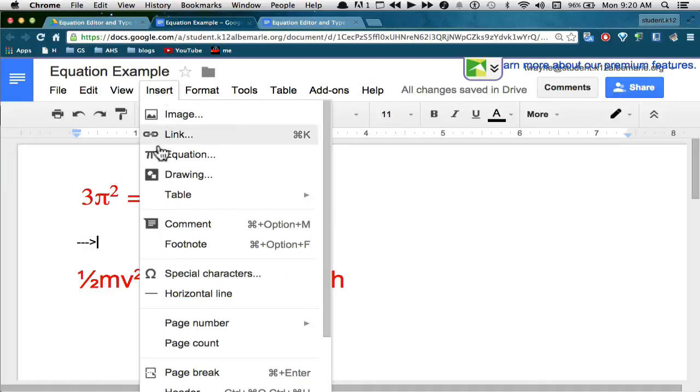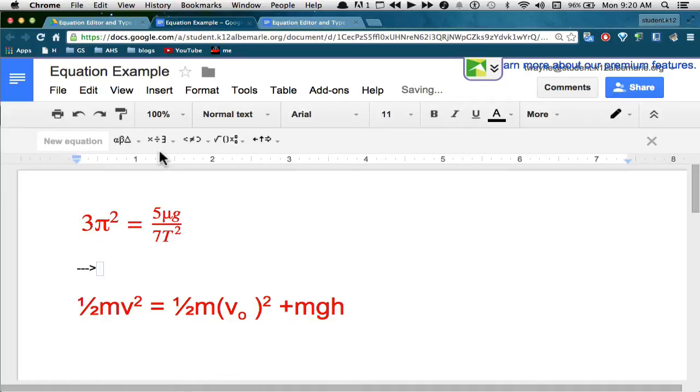I'm going to go to Insert, Equation. When I do this for the first time, a new bar pops up over here. And you can see I've got a little X on the right so I can get rid of it if I want to. But on this bar, I've got some Greek letters. I have some miscellaneous operations, relations, math operations. This is the most common set that we're going to use in this class. And then I've got some arrows that are going to help me.